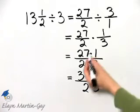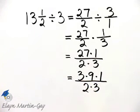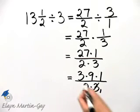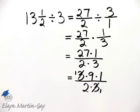Notice I simply wrote twenty-seven as three times nine so that we can see that common factor of three and divide it out.